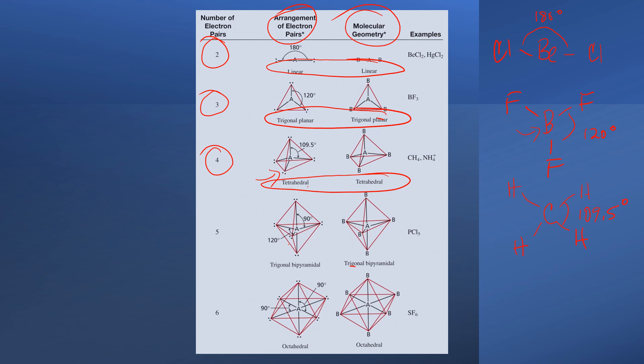The bond angles here are now 109.5 degrees. And again, this is what allows these bonding pairs of electrons to be as far apart from one another in space as possible. Okay, so we have two more to go.